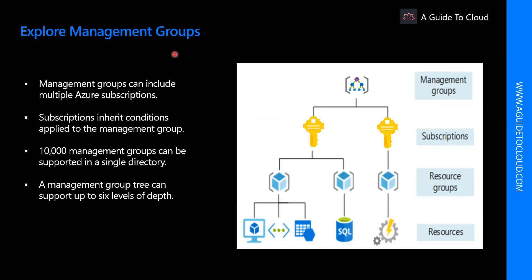The organizing structure for resources in Azure has four levels: management groups, subscriptions, resource groups, and resources. The following image shows the hierarchy of organization for various objects. Management groups are containers that help you manage access, policy, and compliance for multiple subscriptions. All subscriptions in a management group automatically inherit the conditions applied to the management group. A subscription groups together user accounts and the resources created by those user accounts. For each subscription, there are limits or quotas on the amounts of resources you can create and use. Organizations can use subscriptions to manage cost and the resources created by users, teams, and projects.